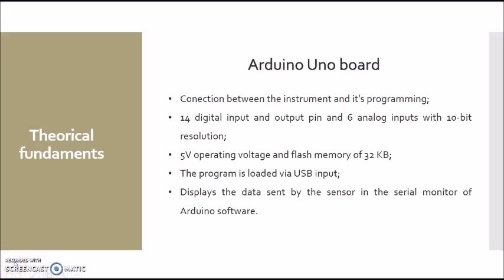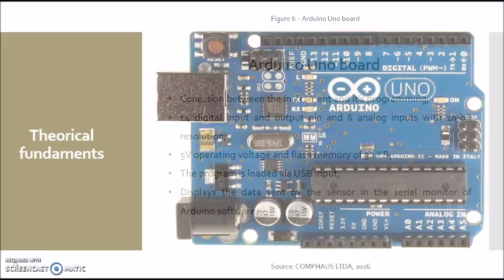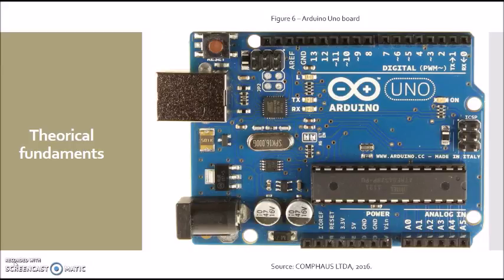The Arduino board uses it as a function to connect the sensor with its operating program. It has 14 digital input and output pins and 6 analog input pins with 10-bit resolution. Its operating voltage may be 3.3 or 5 volts, and its flash memory is 32 kB, which can be observed in the image. The program code made in the Arduino software is loaded onto the board by a USB port, and it transmits the code to the sensor.